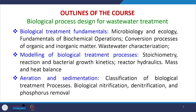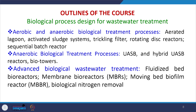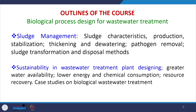Then we will study aerobic and anaerobic biological treatment processes including aerated lagoon, activated sludge system, sprinkling filter, and rotating disc reactors. We will further study anaerobic biological treatment processes including UASB reactor, hybrid UASB reactor, and biotowers. Lastly, we will study advanced biological wastewater treatment methods including fluidized bed bioreactors, membrane bioreactors, moving bed biofilm reactor, and biological nitrogen removal. After that, because all these biological processes generate a lot of sludge, sludge management essentially becomes part of biological process design. So we will study sludge characteristics, its production and stabilization, thickening, dewatering, pathogen removal from sludge, and ultimately sludge transformation and disposal.